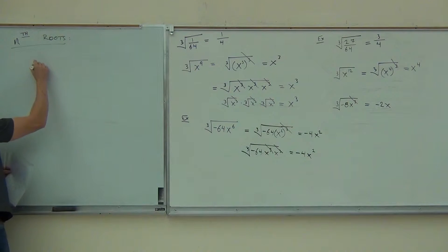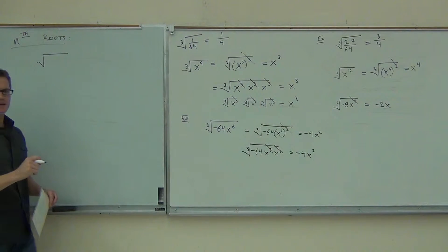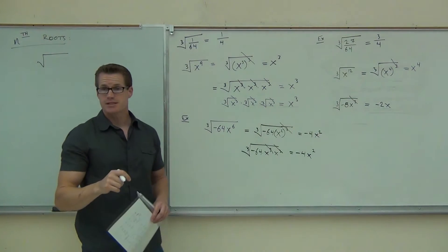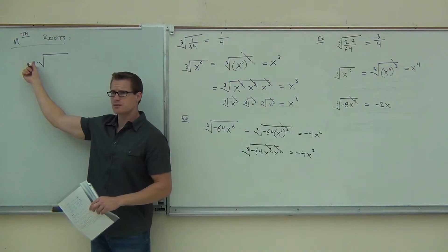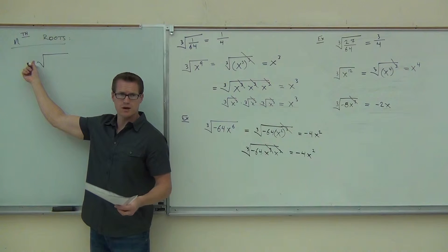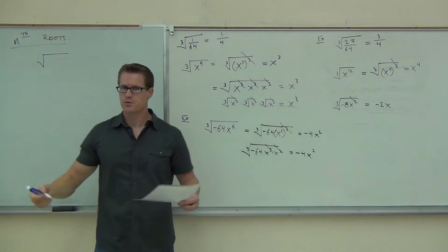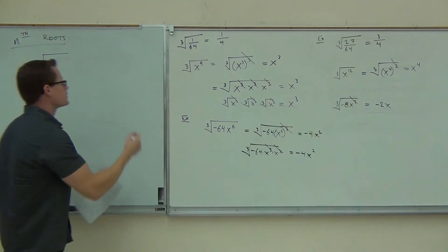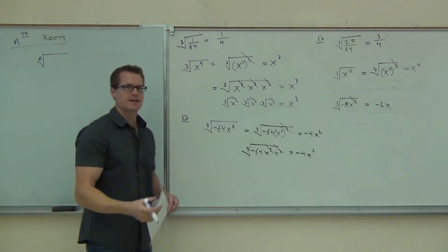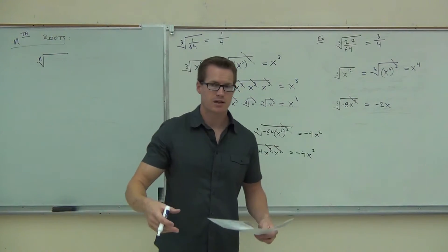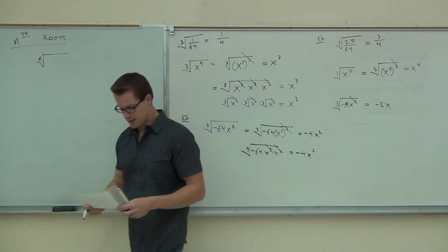Here's how every root looks. We know we have a radical, and we put a little number up front. That index — if I don't write anything, what's that index? Two — square root. If I put a three, it's a cube root. If I put a four, it's a fourth root. Five, it's a fifth root. Whatever number I have there, it's that type of root. That's how we get the nth root: second root, third root, fourth, fifth, sixth — that type of root.